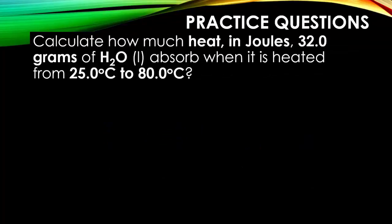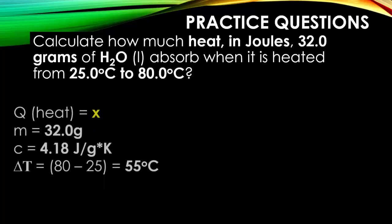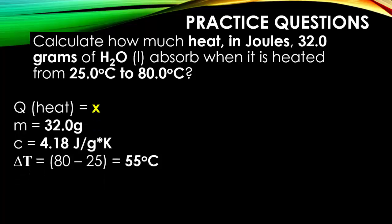Let's practice some of these problems. We're going to be using the Q equals mcΔT formula. We're going to calculate how much heat in joules, 32 grams of water absorbed when it is heated from 25 degrees Celsius to 80 degrees Celsius. The first thing we need to do is identify what the different variables are in our formula. We're looking for the amount of heat, which is called Q. We know our mass, which is 32 grams. We know the specific heat capacity of water is 4.18 joules, because that comes right from Table B. And we know our ΔT, our change in temperature, is final minus start, and that tells us it's 55 degrees Celsius.